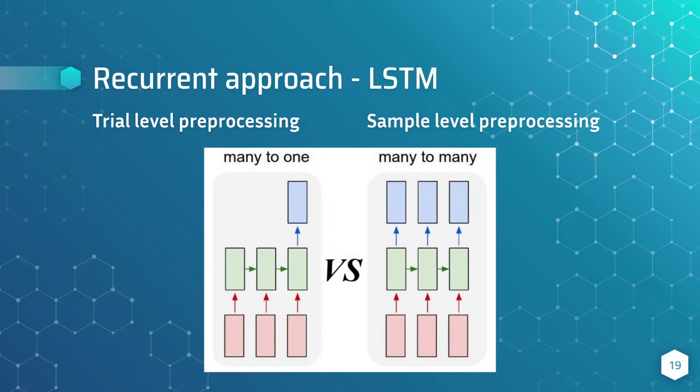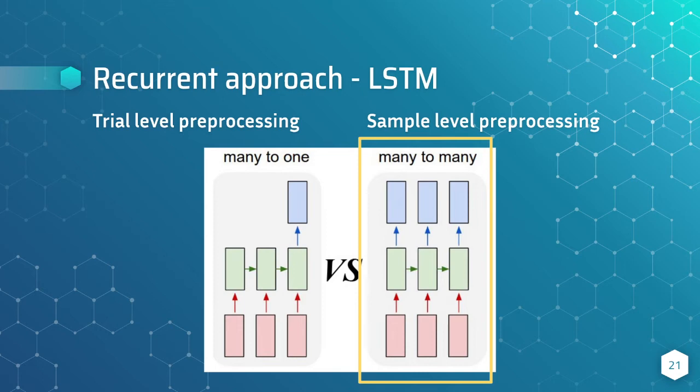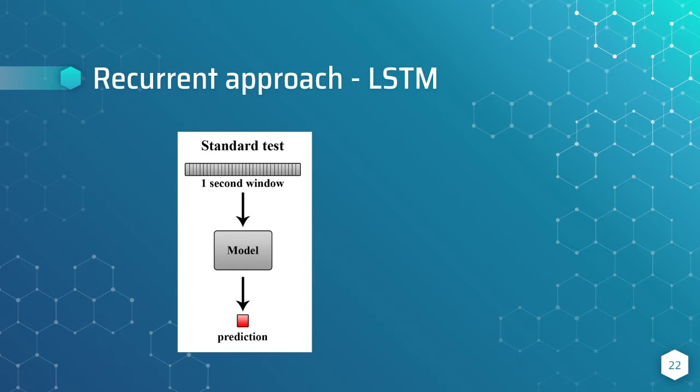An interesting point when using a recurrent neural network is that we can approach time series processing in two different ways. The many-to-one strategy allows us to process the full signal and then give just a prediction. On the other hand, the many-to-many strategy allows us to predict the output at each time step. With the offset and window size, we can follow the many-to-many strategy. However, to compare this model with the Bayesian linear discriminant analysis, we need to transform a many-to-many output into just one prediction.